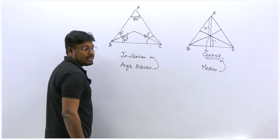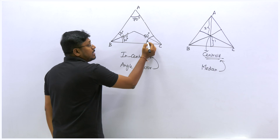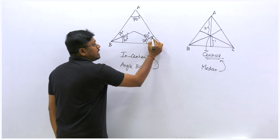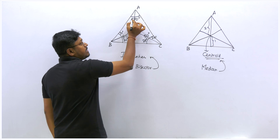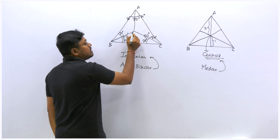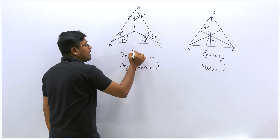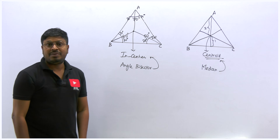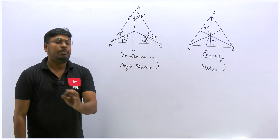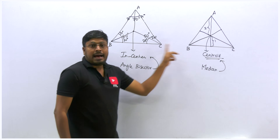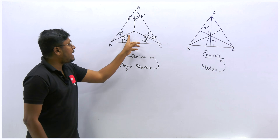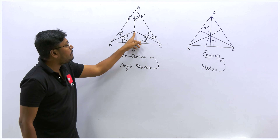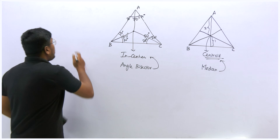Similarly, from the vertex with 50°, we draw an angle bisector splitting it into 25° and 25°. From the vertex with 70°, we draw an angle bisector splitting it into 35° and 35°. The point where all three angle bisectors meet is called the incenter. So if the lines are medians the joining point is the centroid; if the lines are angle bisectors the joining point is the incenter.